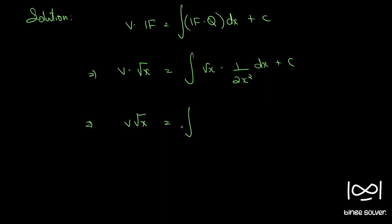Further simplifying: root x is x raised to 1 by 2, and 1 by 2x squared is x raised to minus 2, so the combined power is minus 3 by 2. We can write this as 1 by 2 times integral of x raised to minus 3 by 2 dx plus c.